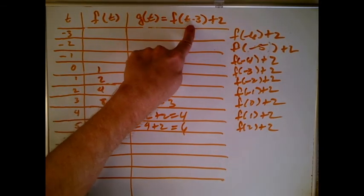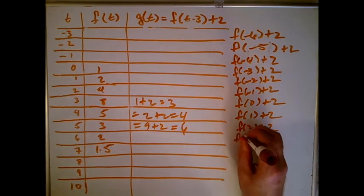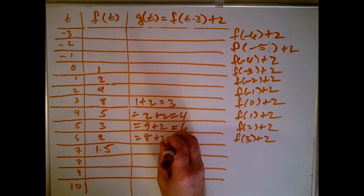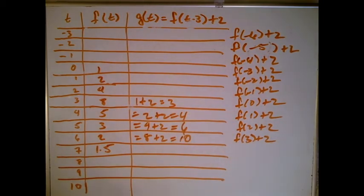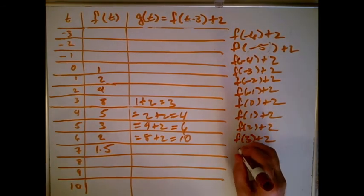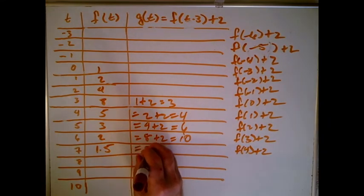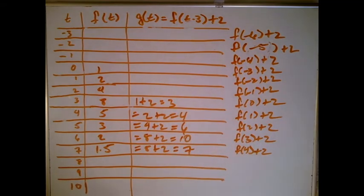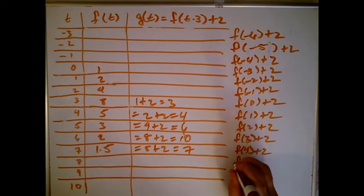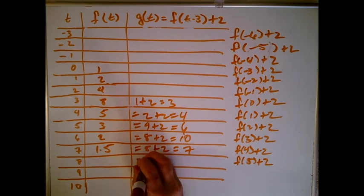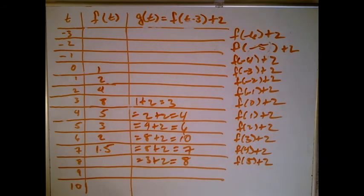Plugging in t = 6 gives f(3) + 2. f(3) = 8, so that's 8 + 2 = 10. Then t = 7 gives f(4) + 2. f(4) = 5, so that's 5 + 2 = 7. Then t = 8 gives f(5) + 2. f(5) = 3, so...